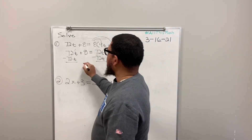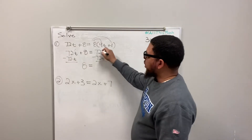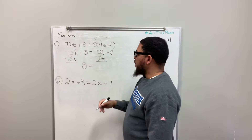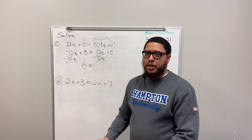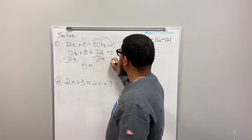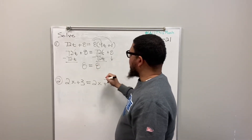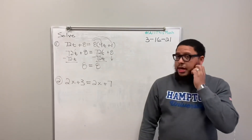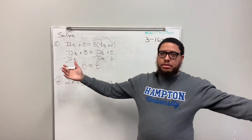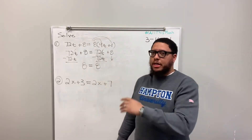I'll bring the 8 down and the equal sign down. I wanted the 72t's to cancel out on the right side, and look — the 72t's also cancelled on the left side. Now I have 8 equals 8. The problem is we're trying to solve for t, but t is gone. That's why this is called a special solution.